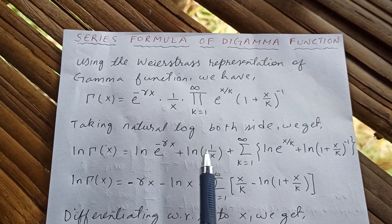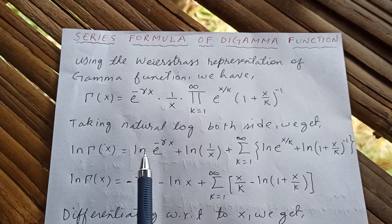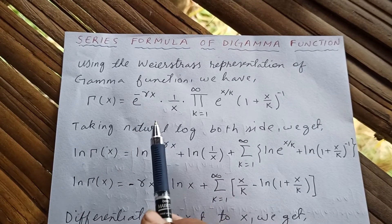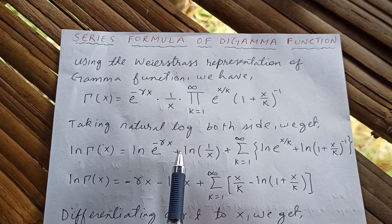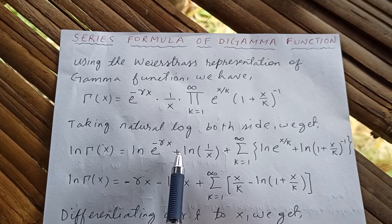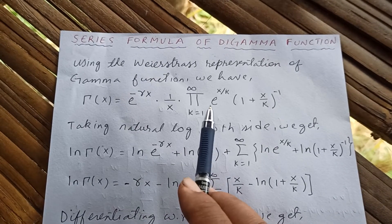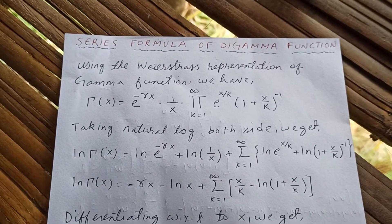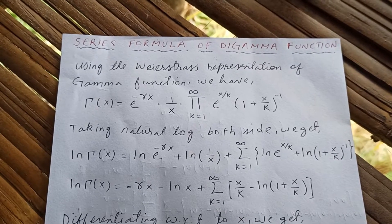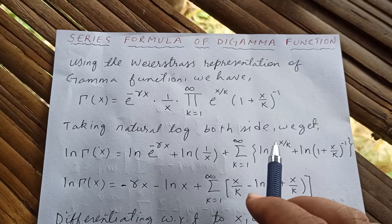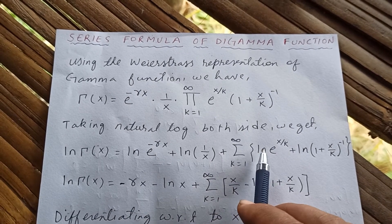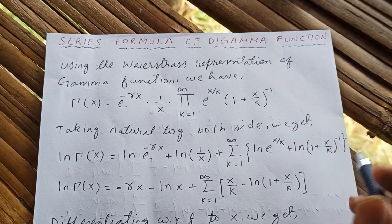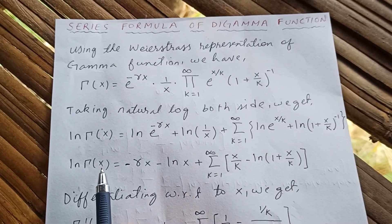Now taking the natural log of both sides, we get: natural log of gamma(x) equals natural log of e to the negative gamma x, plus — because this is a product it becomes a sum by properties of natural logarithm — natural log of one over x, plus the sum from k equals one to infinity of natural log of e to the x over k plus natural log of one plus x over k inverse.